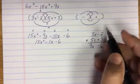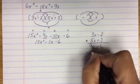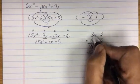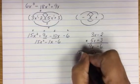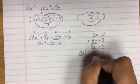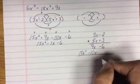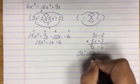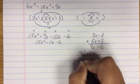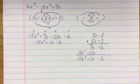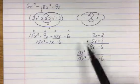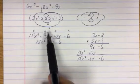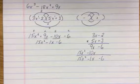5x times negative 2 gives me negative 10x. I line my terms up. 5x times 3 gives me 15x². I add down. This is vertically. No difference. It's just an alternative for students who do not like FOIL.